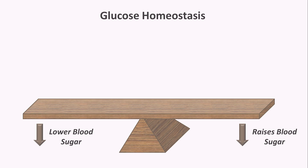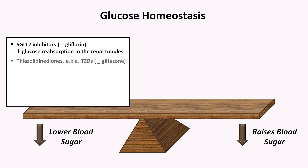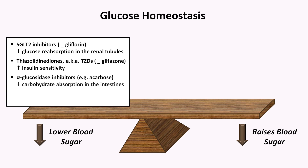Beyond the pancreatic hormonal pathways, there are four more medication classes that affect glucose homeostasis. SGLT2 inhibitors, which all end in "-gliflozin," decrease the reabsorption of filtered glucose in the renal tubules. Thiazolidinediones, commonly known as TZDs or glitazones, increase tissue sensitivity to insulin. Alpha-glucosidase inhibitors such as acarbose decrease carbohydrate absorption in the intestines, but this is neither an effective nor widely used medication. And the last class — by an enormous margin the most prescribed — is the biguanides, of which there currently is one: metformin, which acts via multiple mechanisms.